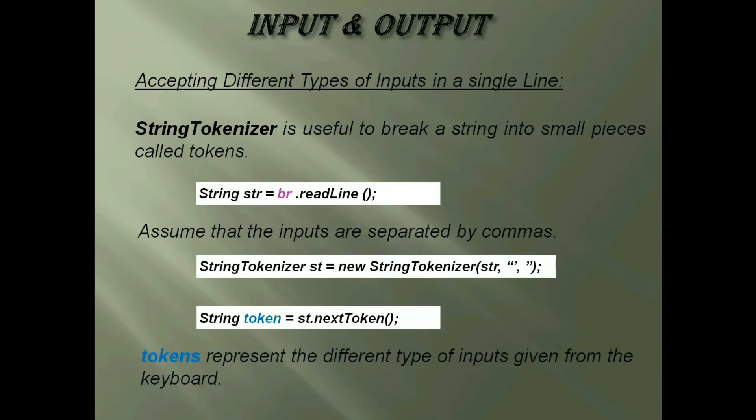So these individual tokens represent the different types of inputs given, and these tokens can be converted into corresponding data types and can be used in the program.